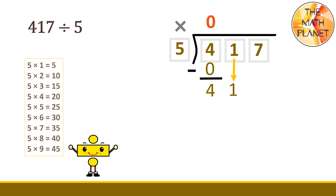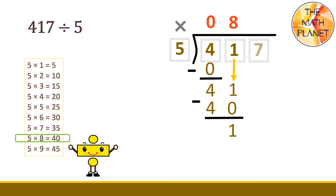So, we'll bring down the 1, and we'll get 41. What is 41 divided by 5? We will use the 8th rule. 41 divided by 5 equals 8. Write the 8 above the 1. Then, multiply: 8 times 5 equals 40. Then, subtract: 41 minus 40 equals 1. Then, we will bring down the next digit, which is 7. So, bring the 7 down and you will get 17.